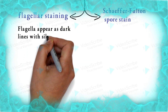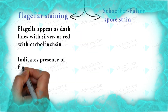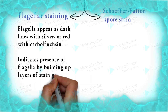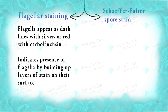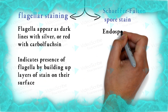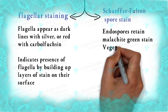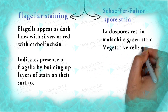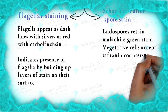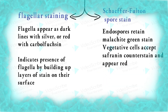Flagella appear as dark lines of silver or red, which indicates the presence of flagella by building up layers of stain on their surface. In Schaeffer-Fulton spore staining, spores retain malachite green stain, whereas vegetative cells accept safranin and appear red.